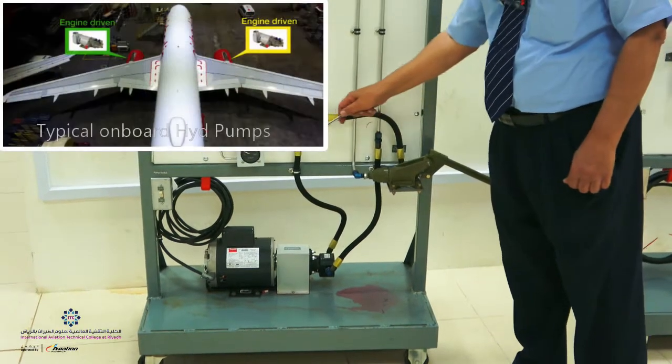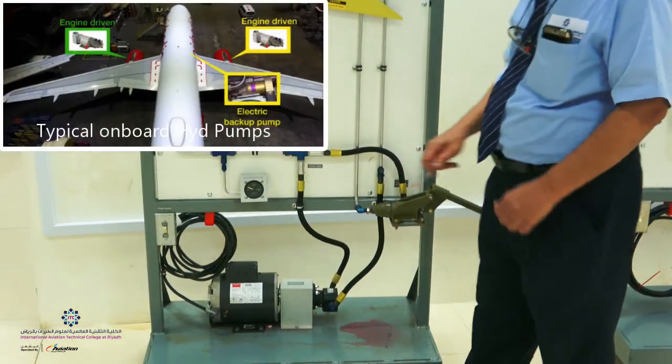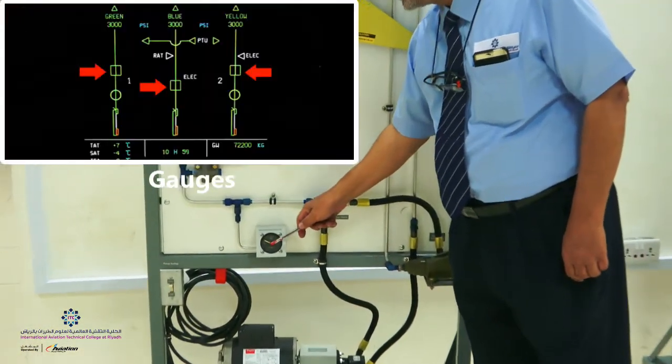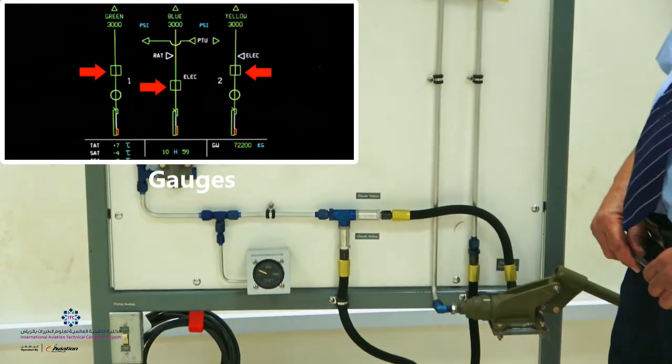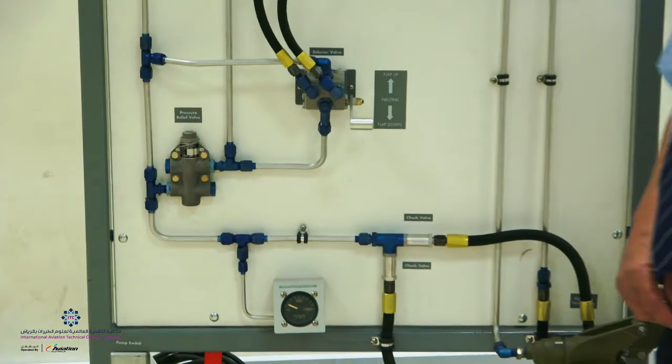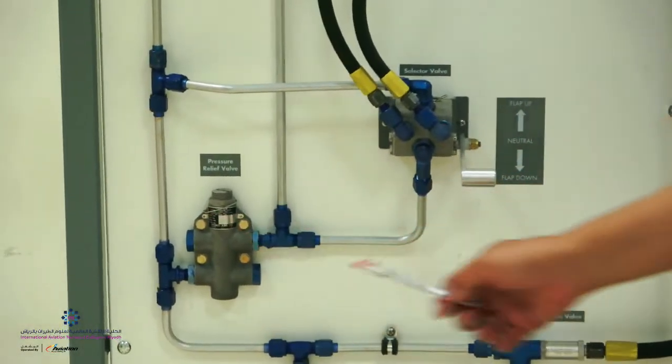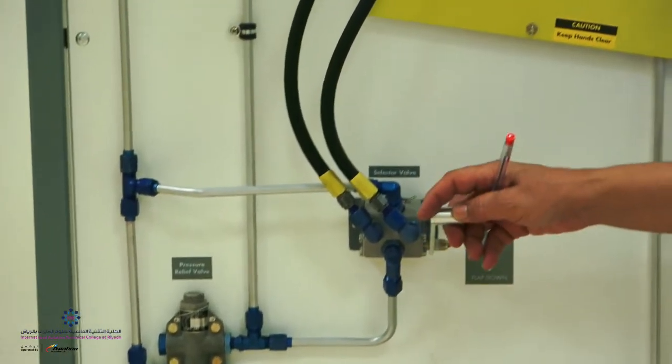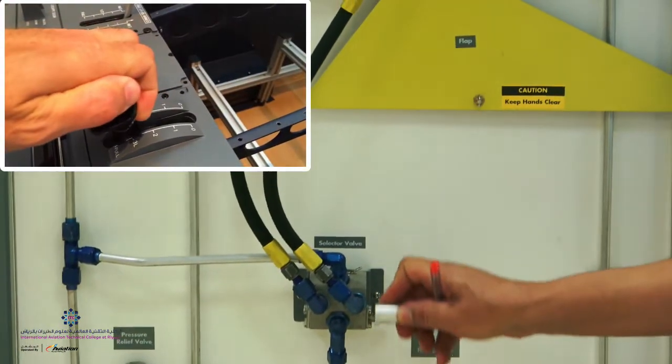We have a manual pump and electric pump. We have gauges to measure system pressure, protection in the form of a pressure relief valve to relieve the excess pressure, and a selector valve to operate the system.